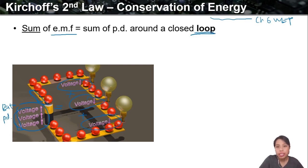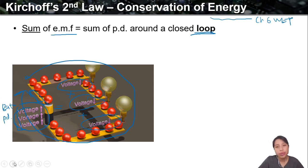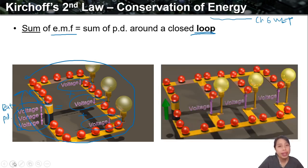Just now we talked about junctions; now we're looking at loops. What is a loop? A loop means you start here, you go one round, you come back — that's a closed loop. This is the simple circuit we've been looking at so far. What if there's something more complicated, like a parallel one? Let's go and see.